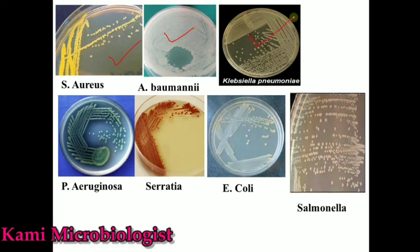Klebsiella will look like this form. Pseudomonas — this is actually the pathogenic pseudomonas aeruginosa. Serratia shows red colonies. E. coli shows gray colonies. Salmonella will look like this form. These are the most important bacteria that can grow on nutrient agar.